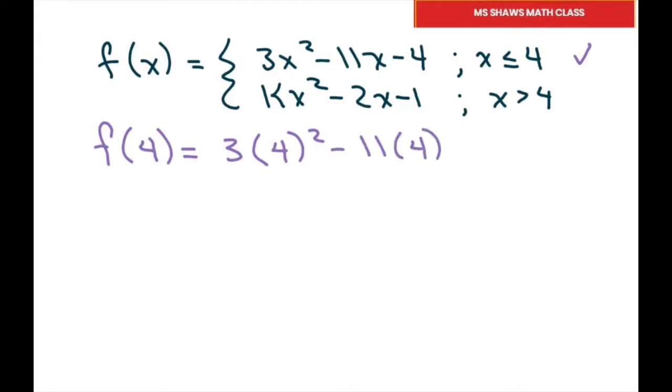So it's 3 times 16 minus 44 minus 4, which is 48 minus 48, and that equals 0.